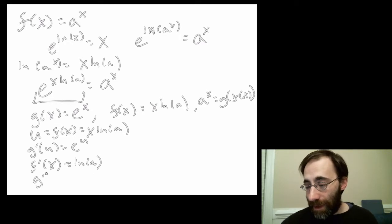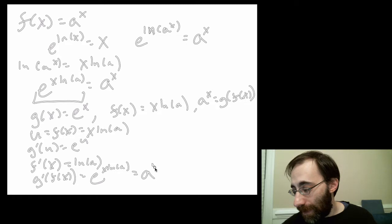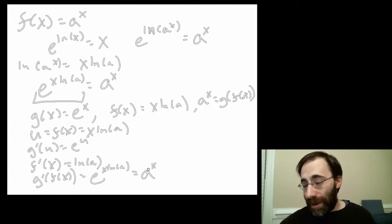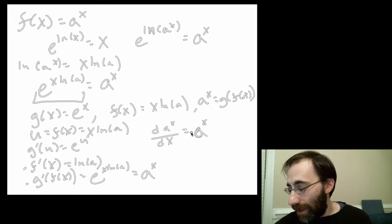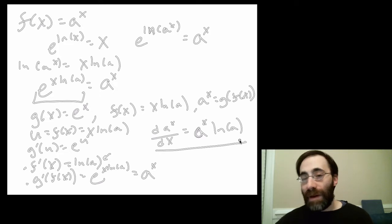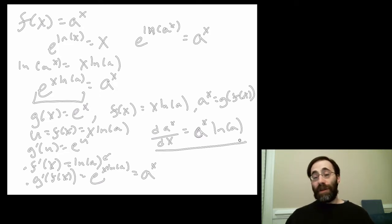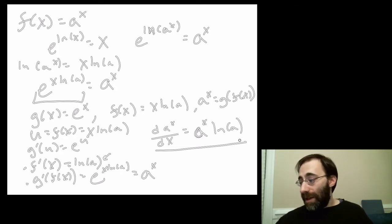Now we put f of x back in for u: that gives e to the x natural log of a, which we replace back with a to the x. Multiplying this together with f prime, the derivative of a to the x with respect to x equals a to the x times the natural log of a. That is the general rule for differentiating exponentials. You can check: if a equals e, the natural log of e is just 1, so the extra factor goes away, and it works out for all possible values of a.